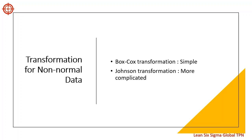The Box-Cox transformation is simple to understand, but does not always identify a successful transformation. The Johnson transformation identifies a successful transformation more often than Box-Cox, but is more complicated. Both attempt to transform data mathematically so the data follow a normal distribution.